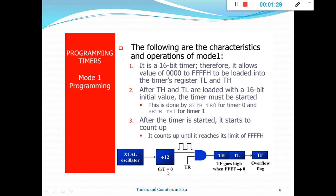So you know C̄/T. When C̄/T is equal to 0, it is going to do timer operation. When C̄/T is equal to 1, it is going to do counter operation. So if C̄/T is equal to 0, it is used as a timer for time delay generation, and the clock source for the time delay is the crystal frequency of the 8051.